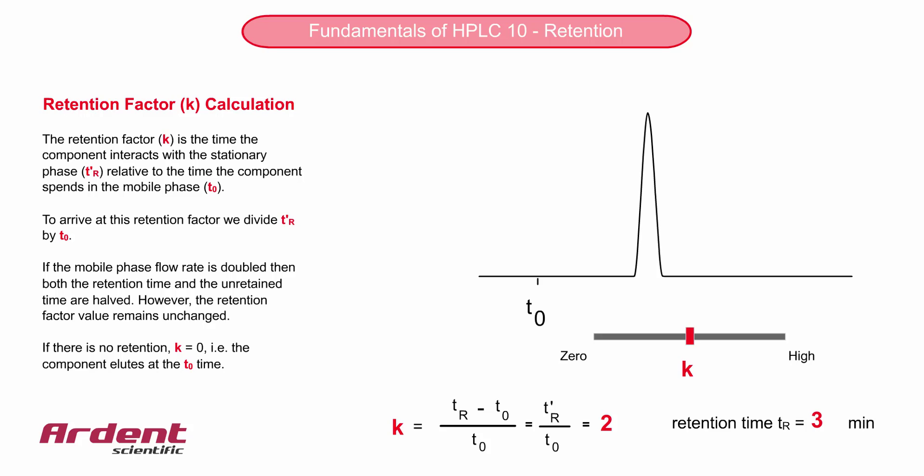If they spend 10 minutes in the shops, and a total of 2 minutes on the moving walkway, then they have spent 5 times longer in the shops. The retention factor is 5.